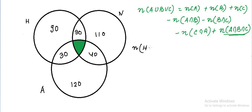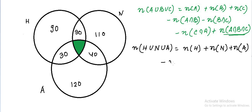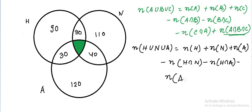So writing the same formula in this notation: H union N union A equals the number of students subscribed to Hotstar, plus students subscribed to Netflix, plus students subscribed to Amazon Prime, minus those subscribed to Hotstar and Netflix, minus Hotstar and Amazon, minus Amazon and Netflix, plus all students who subscribed to all three.